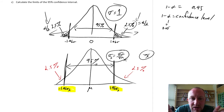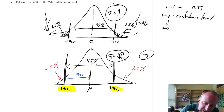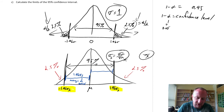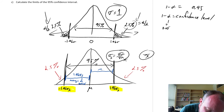Coming to our confidence interval — we define the distance between those two limits, which is 1.96 sigma x-bar. This is what we define as our margin of error. It's exactly the same distance from the mean on each side: 1.96 standard errors.